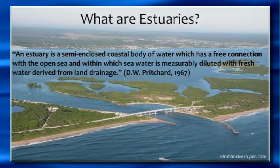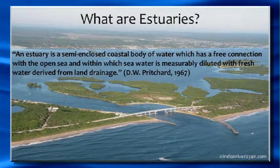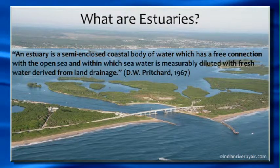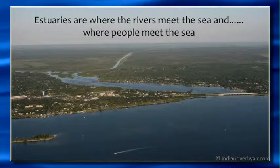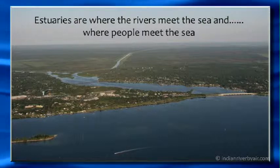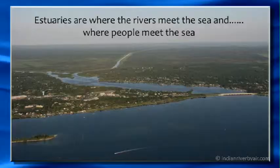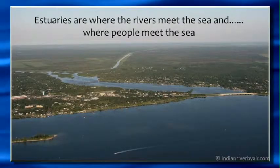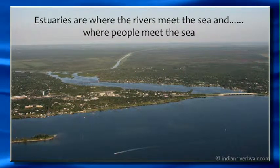An estuary, as defined by Pritchard in 1967, is a semi-enclosed coastal body of water connected with the sea — in this case through the Sebastian Inlet — which is diluted with fresh water drained off the land. In very simple terms, the estuary is where the rivers meet the seas. But it's also where the people meet the sea. The earliest civilizations came to live around rivers and estuaries. This is the Sebastian River providing fresh water into the salt, brackish water of the estuary.